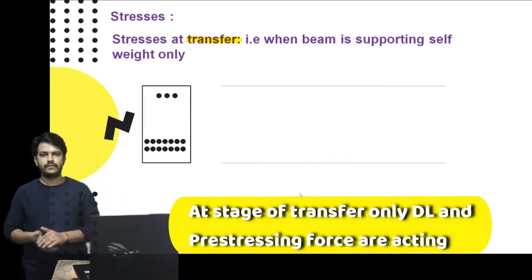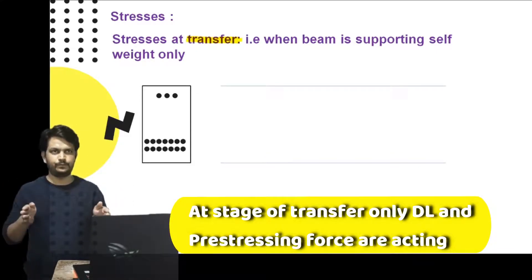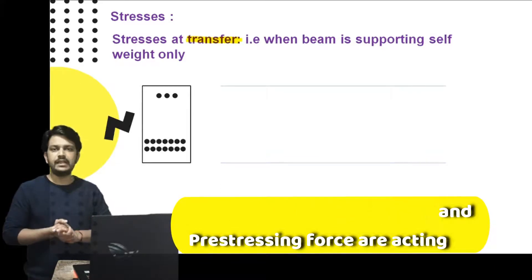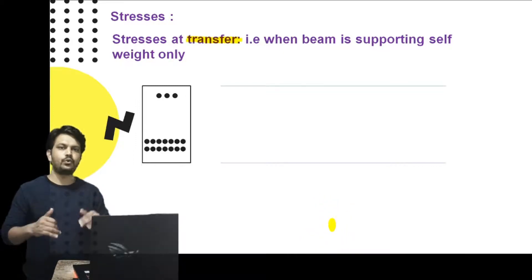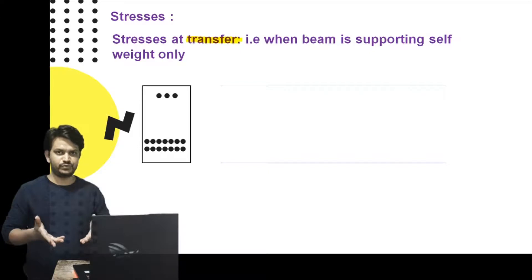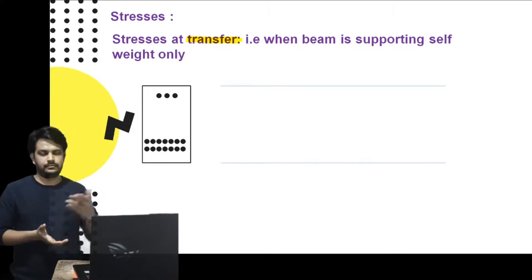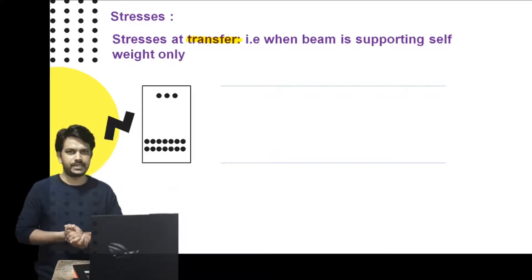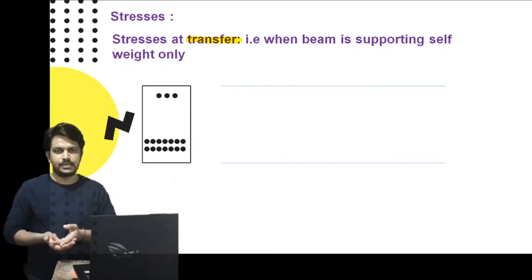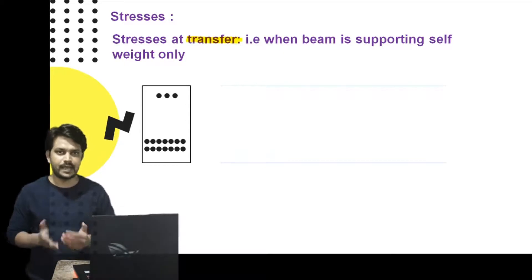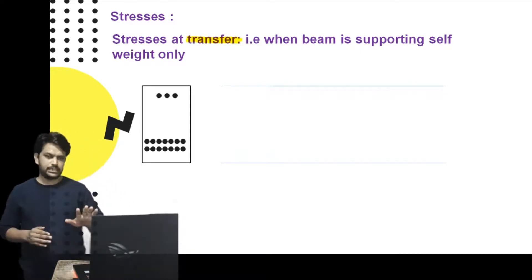Stress at transfer: whenever a beam is pre-stressed with a tendon and placed on its supports but not yet subjected to live load — only supporting its own weight — this stage is called 'transfer', because we are only transferring the pre-stress to the beam. When the beam is then subjected to live load, that is called the 'stress at service' stage.